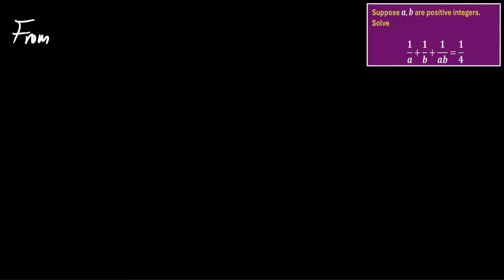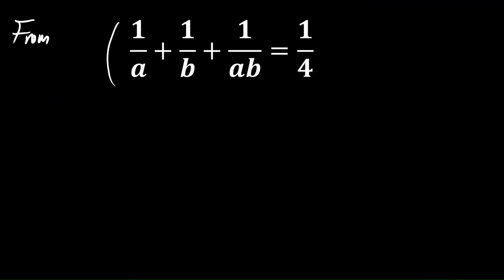From the equation, we can multiply both sides by 4ab. Then we have 4b + 4a + 4 = ab.